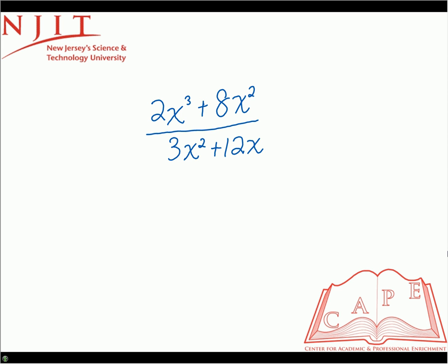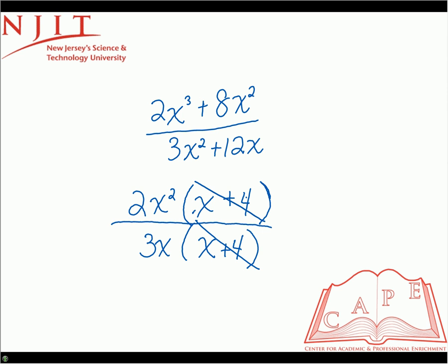Again here we just have an example of factoring out common terms. In the numerator we can factor out both a 2 and an x squared because that's a term that both have in common. Then what's left in the first term would just be the x, and the second term would be four because the two goes into eight four times. That would be it because we already took out the x squared.